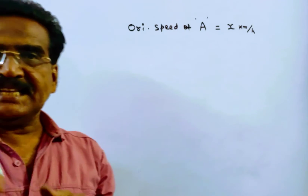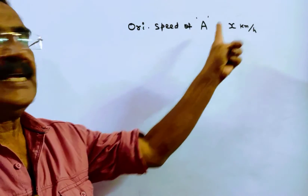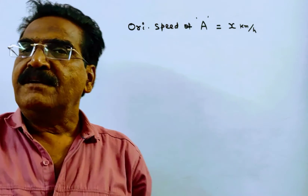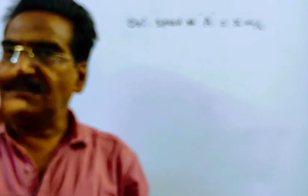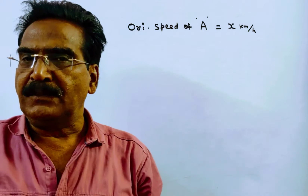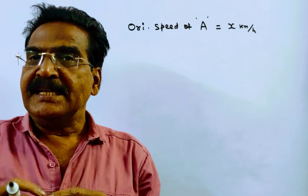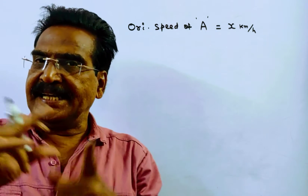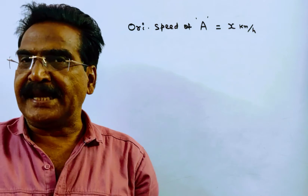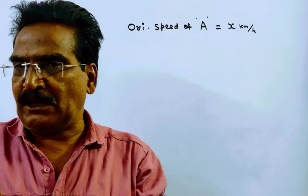Friends, say the original speed of A is X kmph and speed of B is H kmph. From the first statement of the problem, it is given that A takes 2 hours more than B to travel 40 kilometers.